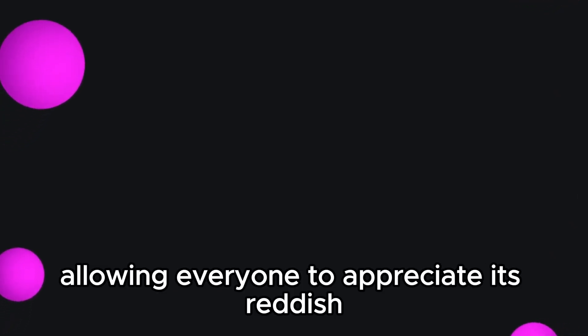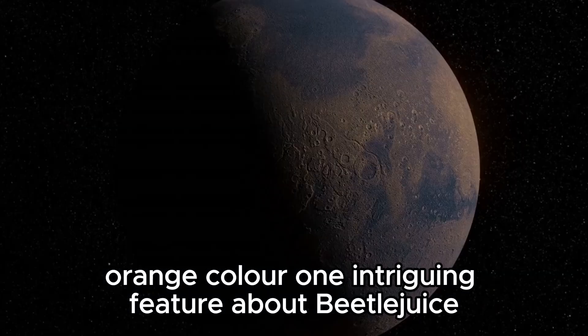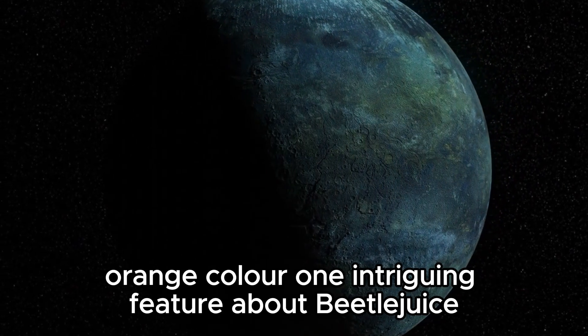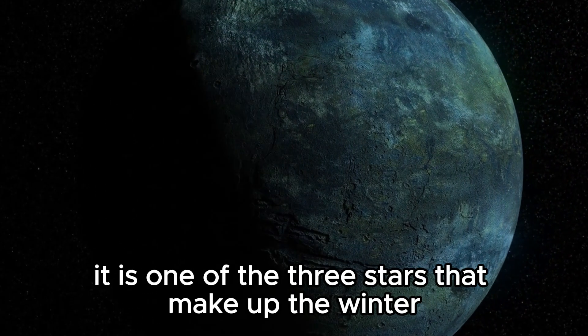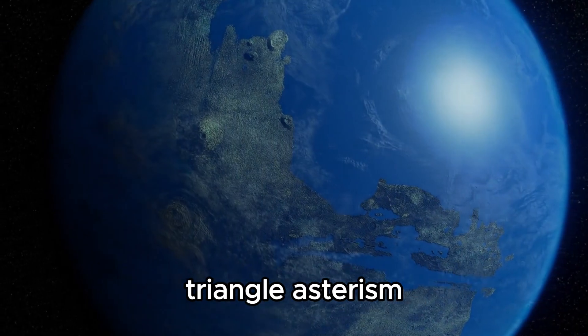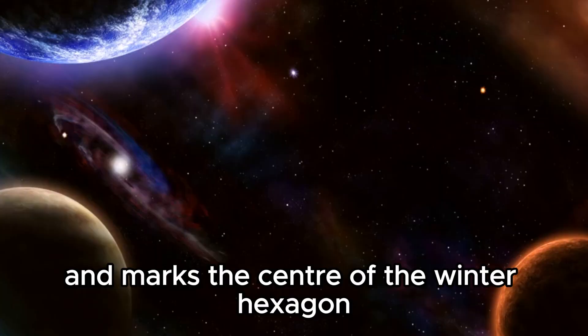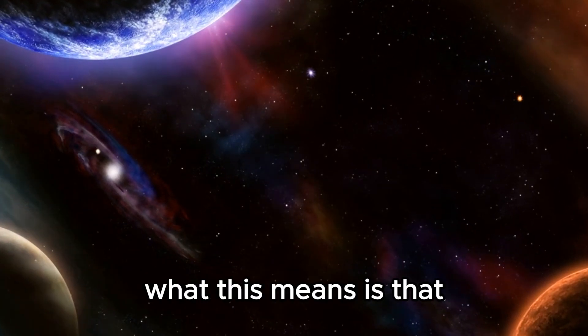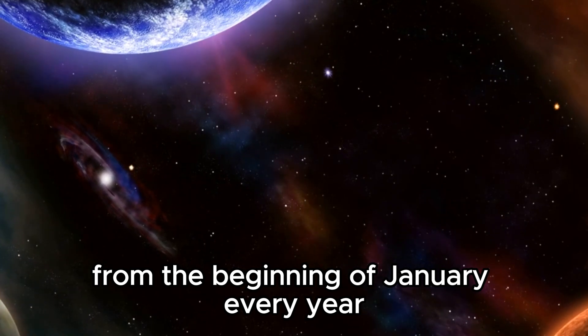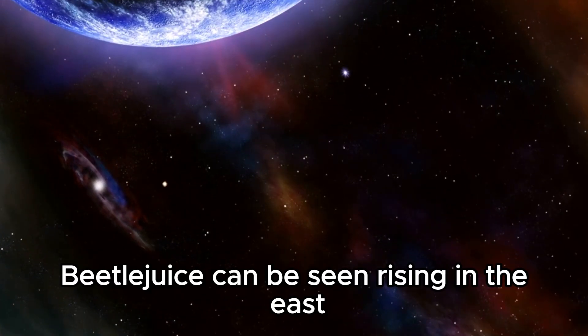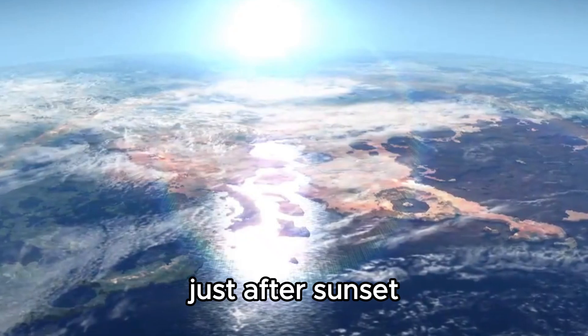This red supergiant star is the tenth brightest star in the night sky, allowing everyone to appreciate its reddish-orange color. One intriguing feature about Betelgeuse is that it is one of the three stars that make up the winter triangle asterism and marks the center of the winter hexagon. What this means is that from the beginning of January every year, Betelgeuse can be seen rising in the east just after sunset.